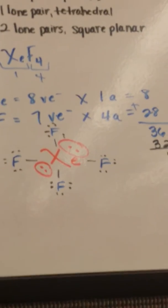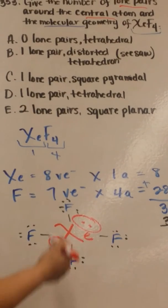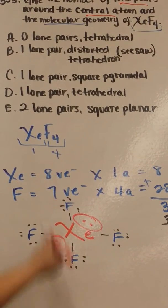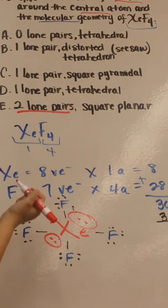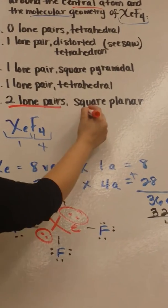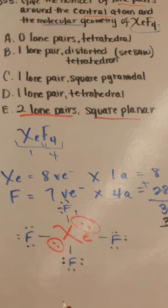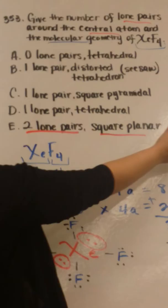So if we look at the answer choices, we can see, let's start first with our two lone pairs. And we just said that it was square planar, so E has both of these. So we can see that E is your answer.